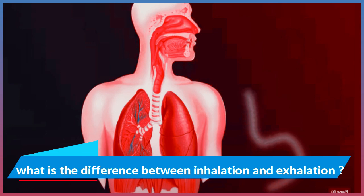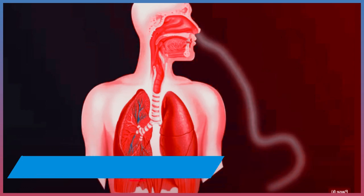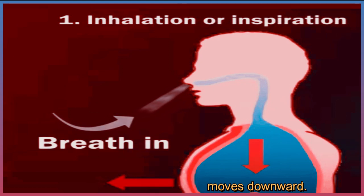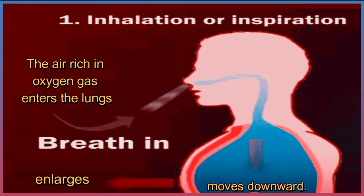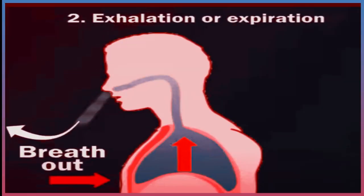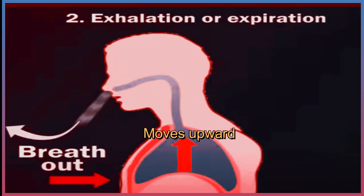What is the difference between inhalation and exhalation? During inhalation, the diaphragm contracts, shrinks, and moves downward. The size of the chest increases and enlarges. The air rich in oxygen gas enters the lungs.